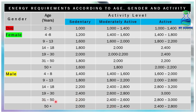For males aged 31 to 50 years, sedentary lifestyle requires 2200 kcal, moderately active is 2400–2600 kcal and very active is 2800 kcal. For males aged 50 plus, sedentary is 2000 kcal, moderately active is 2200–2400 kcal and very active is 2400–2800 kcal.